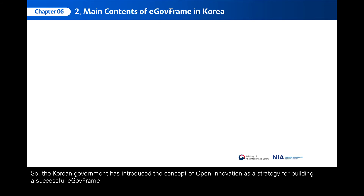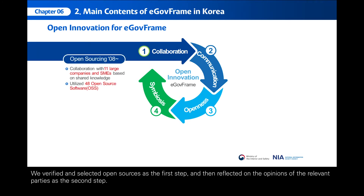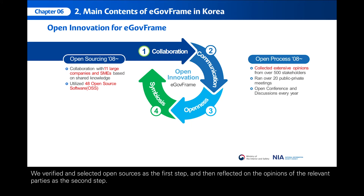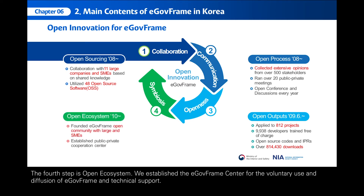The Korean government has introduced the concept of open innovation as a strategy for building a successful E-GovFrame. We went through the following four steps to achieve our goals. We verified and selected open sources as the first step, and then reflected on the opinions of the relevant parties as the second step. The third step is open outputs — all the source codes and intellectual property rights, known as IPRs, are released to the public free of charge. The fourth step is open ecosystem. We established the E-GovFrame Center for the voluntary use and diffusion of E-GovFrame and technical support.